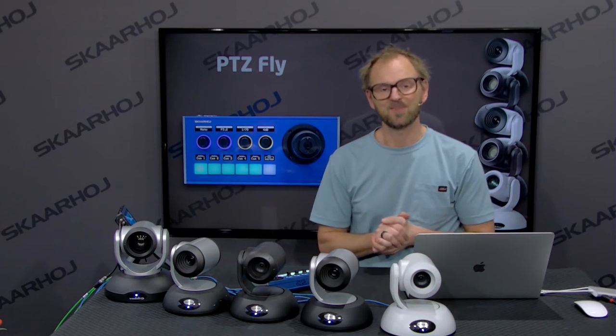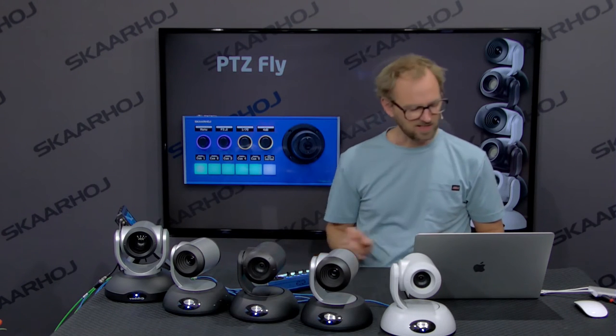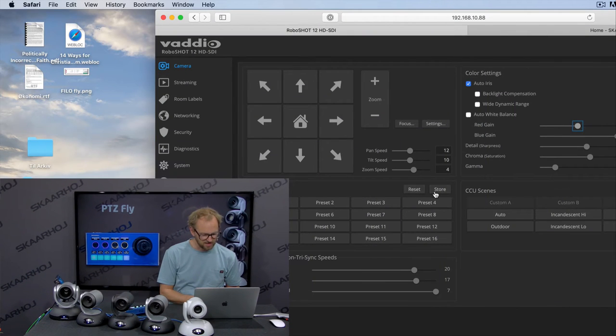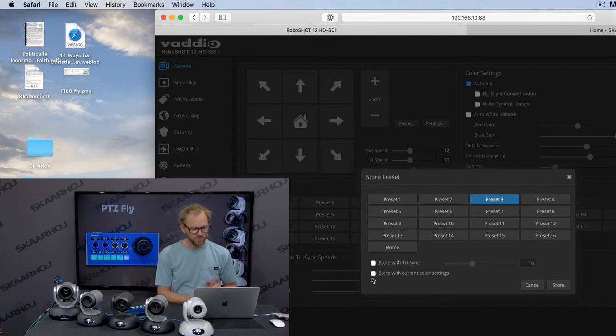So we have some notes to put down about the presets in the camera. These cameras support presets which can include color information or not. That depends on a setting. So if we go to store preset in the web interface, you can see this and use this one. Then let's say we want to store position in a camera. And you can see how there are options like store with current color setting. And if you check this one, it means that the preset will include the color settings of the cameras. Otherwise it will probably just be pan, tilt, and zoom. Now of course that's an option you can choose on your Skaarhoj controller as well.